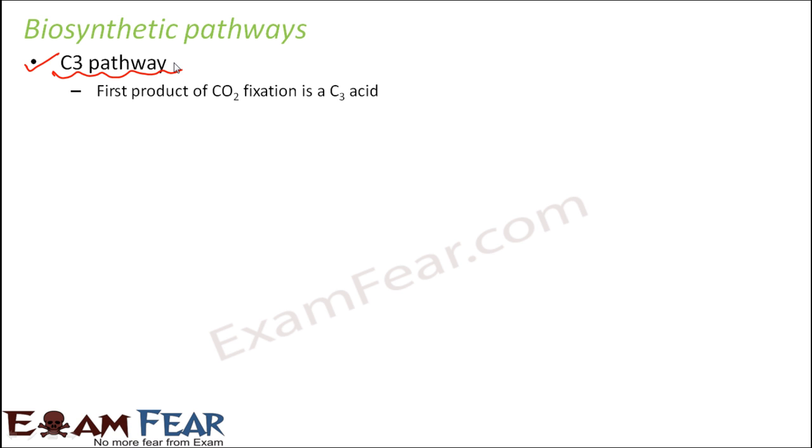So C3 pathway is the one where the first product of carbon dioxide fixation is a C3 acid. C3 pathway, it means here in this process we start with carbon dioxide and we want to produce glucose or we want to convert that carbon dioxide into glucose somehow. That is our agenda. So the first product, now it is again a multi-step process. There are many steps involved. There are many intermediate products which are formed.